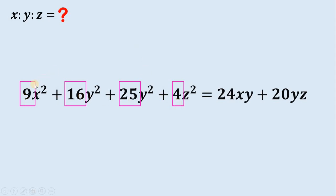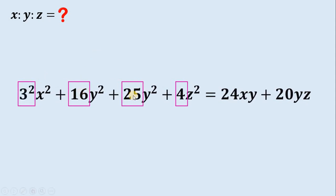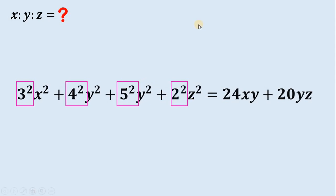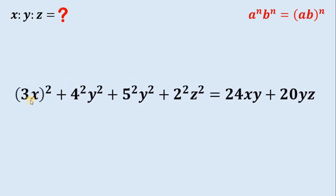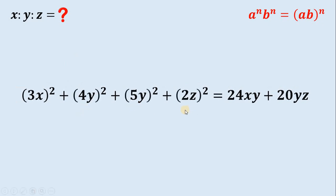Since they are perfect squares, 9 can be written as 3 squared, 16 as 4 squared, 25 as 5 squared, and 4 as 2 squared. Now let's use the law of exponents: if we have a raised to n times b raised to n, it is equivalent to a times b raised to the power of n. Therefore, 3 squared times x squared can be written as 3x raised to the power of 2. We can do the same thing to the other three terms.